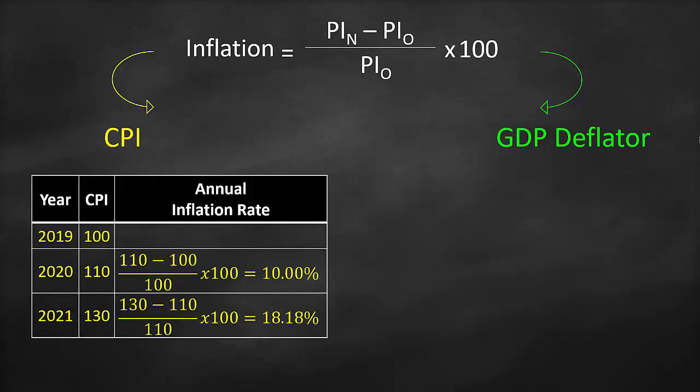Let's look at a numerical example using CPI. Assume we have years 2019, 2020, and 2021, with CPI values of 100, 110, and 130 respectively. For 2020, inflation equals (110 − 100) / 100 × 100 = 10%. For 2021, inflation equals (130 − 110) / 110 × 100 = 18.18%.